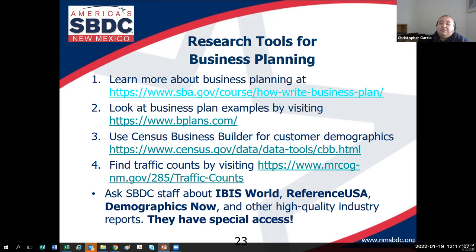The third is Census Business Builder — a no-cost database that allows you to find demographic information about customers, census stats about businesses in your industry, and estimates of yearly household expenditures in certain categories. The fourth is the Middle Rio Grande Council of Governments' interactive traffic counts map — it allows you to enter an address and see what the average weekday and weekly traffic counts are for a stretch of road.